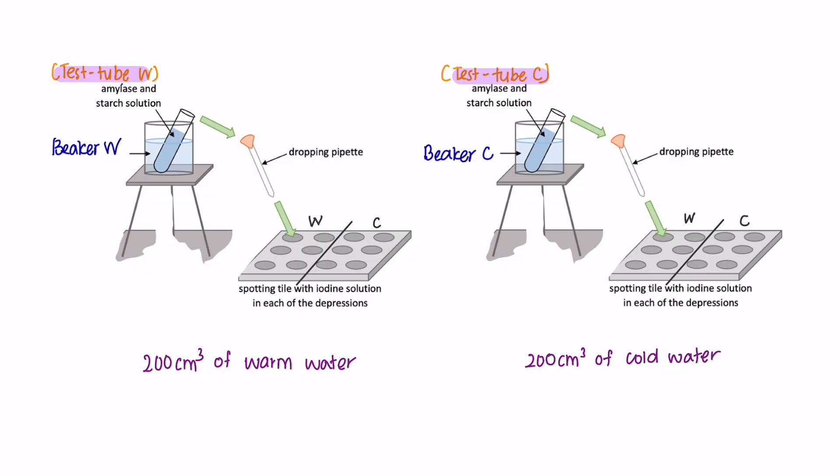And then it is placed in two different beakers which is beaker W of warm water and beaker C of cold water. The purpose of this experiment is to see how different temperatures will affect the enzyme activity of amylase.